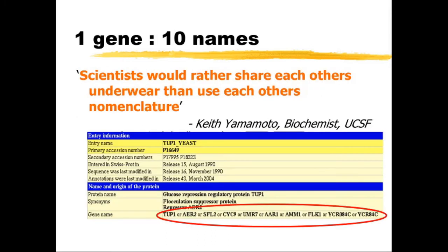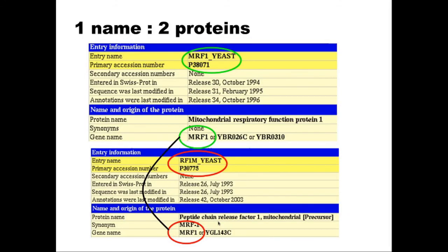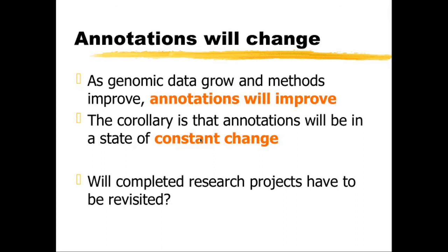Here are a couple of real-world examples. Keith Yamamoto, a biochemist from UCSF, said scientists would rather share each other's underwear than use each other's nomenclature. This is an example of a particular protein and the gene that encodes it — there are ten different names for the same gene, because different groups haven't collaborated. Even worse, here we have two completely different proteins: one is mitochondrial respiratory function protein 1, the other is peptide chain release factor 1 — and they have both been given the same gene name.